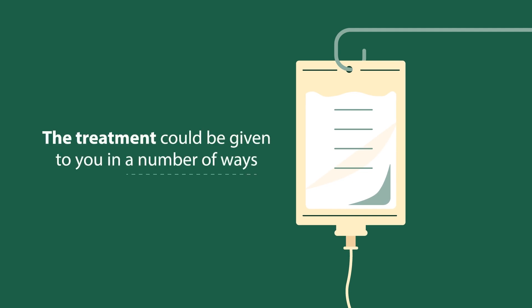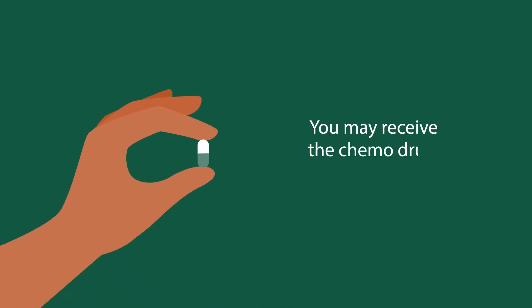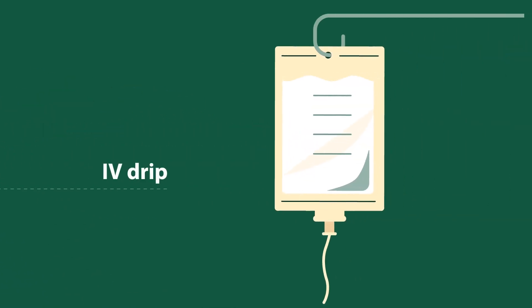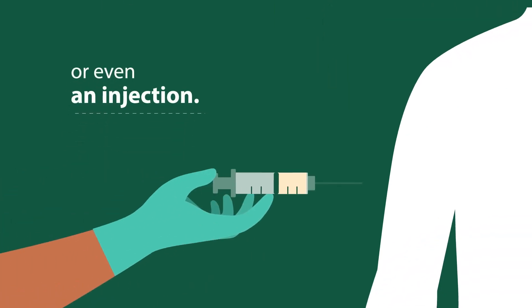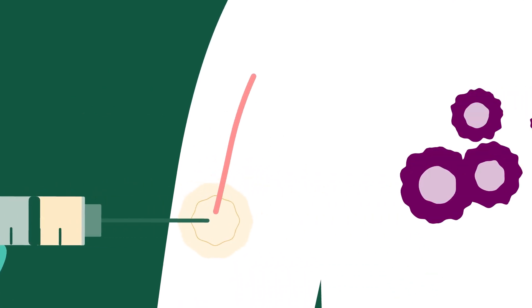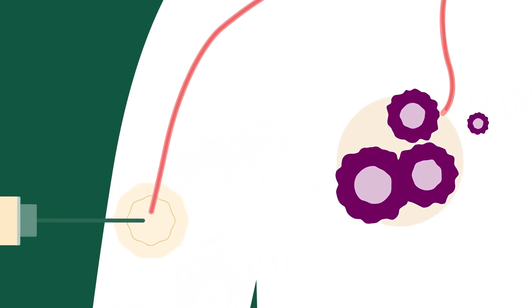If your doctor prescribes chemotherapy, the treatment could be given to you in a number of ways, depending on your type of cancer. You may receive the chemo drugs through a pill, an IV drip, or even an injection. As the drugs are delivered, their hunt begins for fast-growing cells.